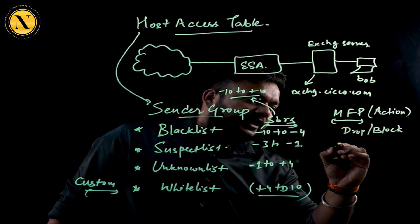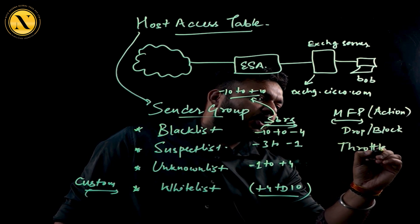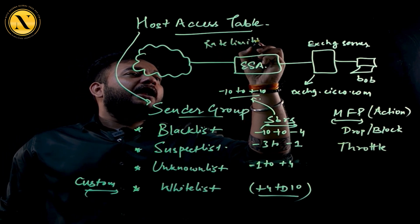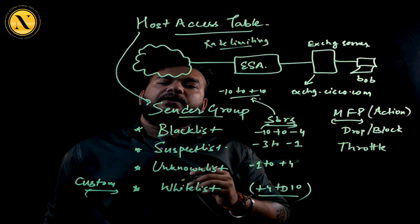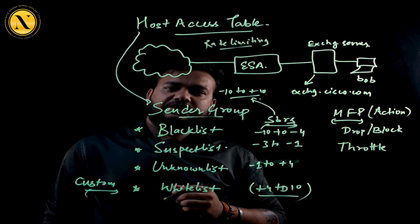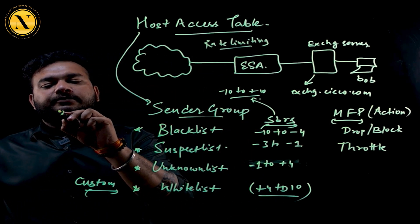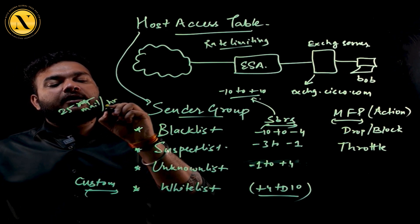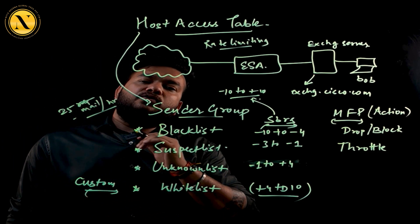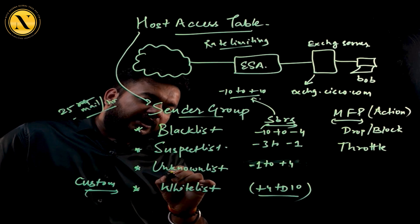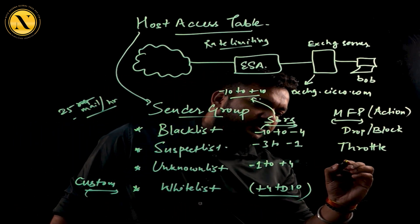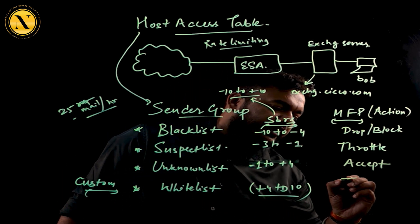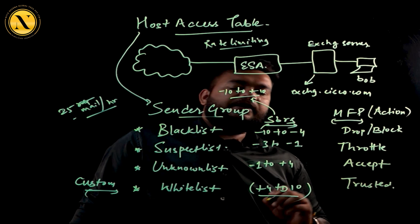For the suspect list, the action is throttle. Throttle means rate limitation — I am limiting the rate of incoming emails, for example allowing only 25 emails per day or per hour for that user. For the unknown list, accept is the default action. For the whitelist, I can define the action called trusted.